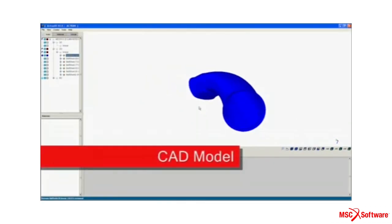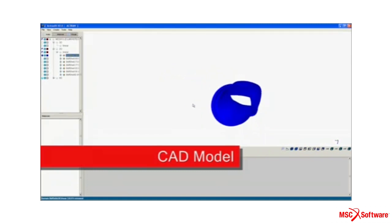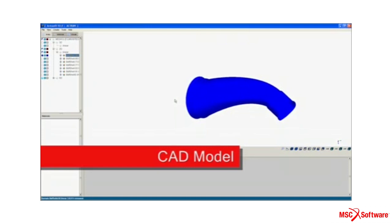This view shows a CAD model of the duct in ACTRAN's visual interface. As you can see, this duct provides a transition from a square intake to a round exhaust.